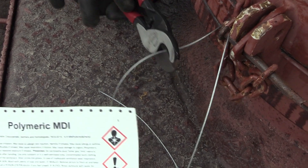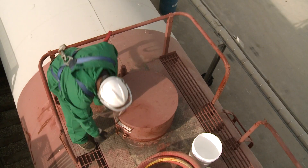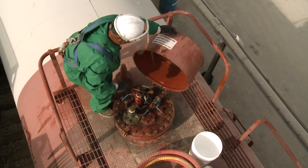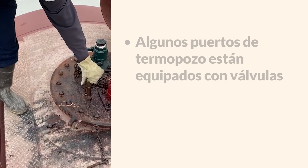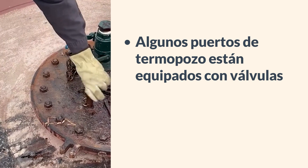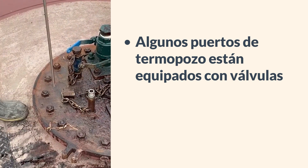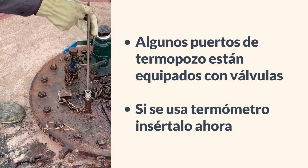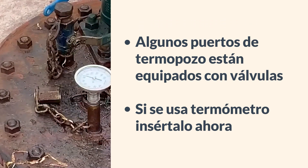Deberá romper el sello de la escotilla de la válvula, quitar la clavija de seguridad y abrir la escotilla para verificar la temperatura del producto y la presión de la almohadilla. Quite cuidadosamente la tapa protectora del tubo del termoposo. Si el carrotanque está equipado con una válvula en el tubo del termoposo, abra la válvula con cuidado. Inserte un termómetro adecuado en el termoposo para determinar que el carrotanque está a la temperatura adecuada para la descarga.